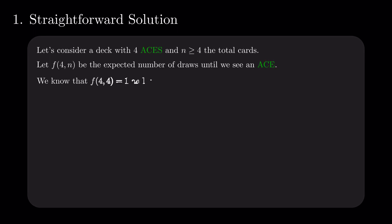Let us now consider a deck with four aces and n total cards, and denote by f of 4 and n the expected number of draws until we see an ace. We have just proved that f of 4 and 4 is 1, and f of 4 and 5 is 1.2.